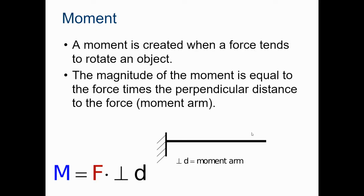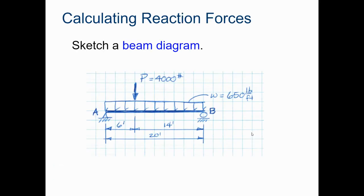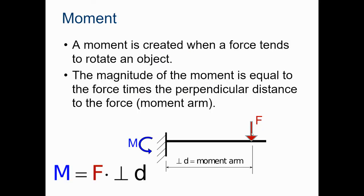A moment is created when a force tends to rotate an object. And the magnitude of the moment is equal to the force times the perpendicular distance of the force. And that's called the moment arm. So there's our force coming down. And we have rotational force. And that gives us our moment.